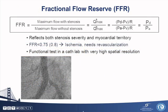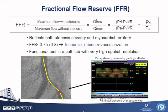Today I'd like to talk about the physiologic aspect of bifurcation lesion and side branch options. You know very well about the fractional flow reserve. This is a pressure-derived flow parameter which reflects both the stenosis severity and the myocardial territory. FFR less than 0.75 in general means the presence of myocardial ischemia and needs revascularization. It's like performing a functional test in a cath lab with very high spatial resolution. When you encounter jailed side branches and want to measure FFR, you just push the pressure wire down to the lesion and give some adenosine, then you'll easily get this number.